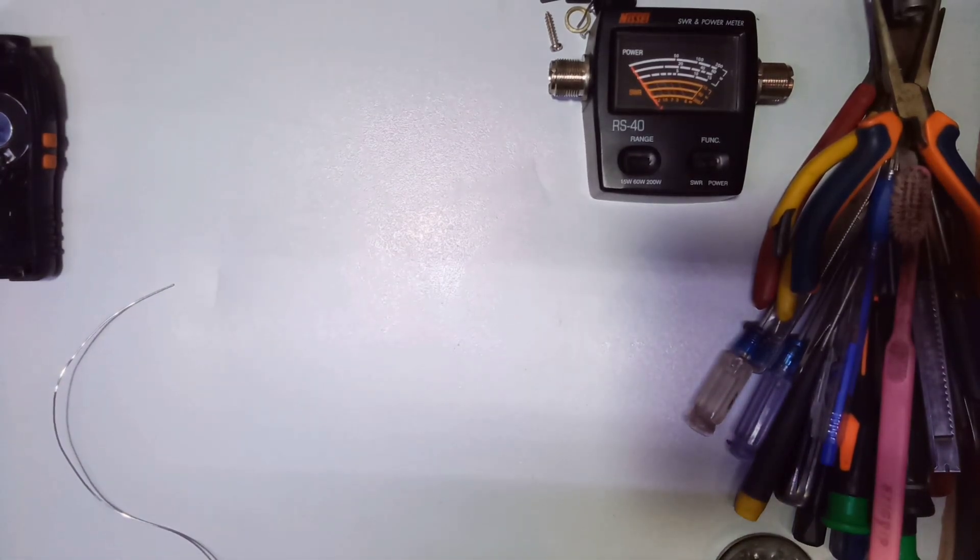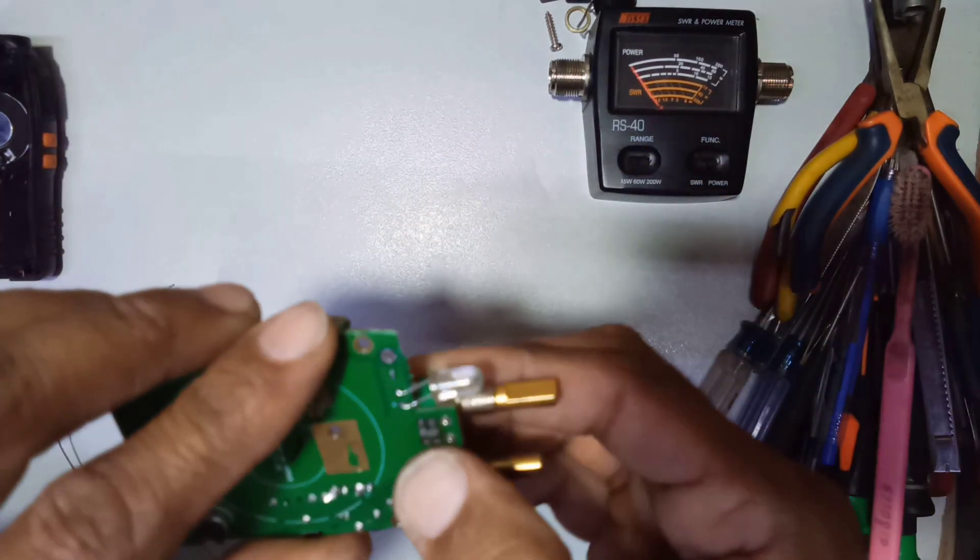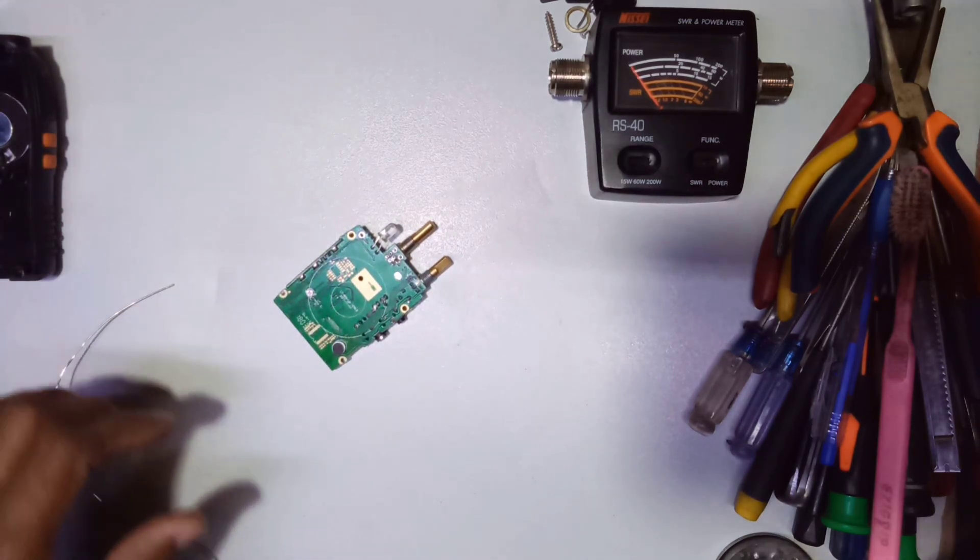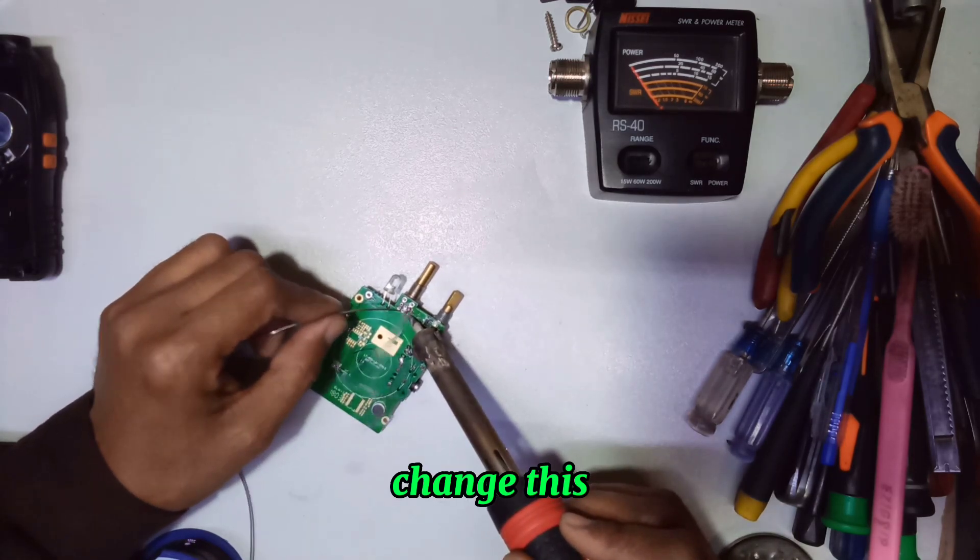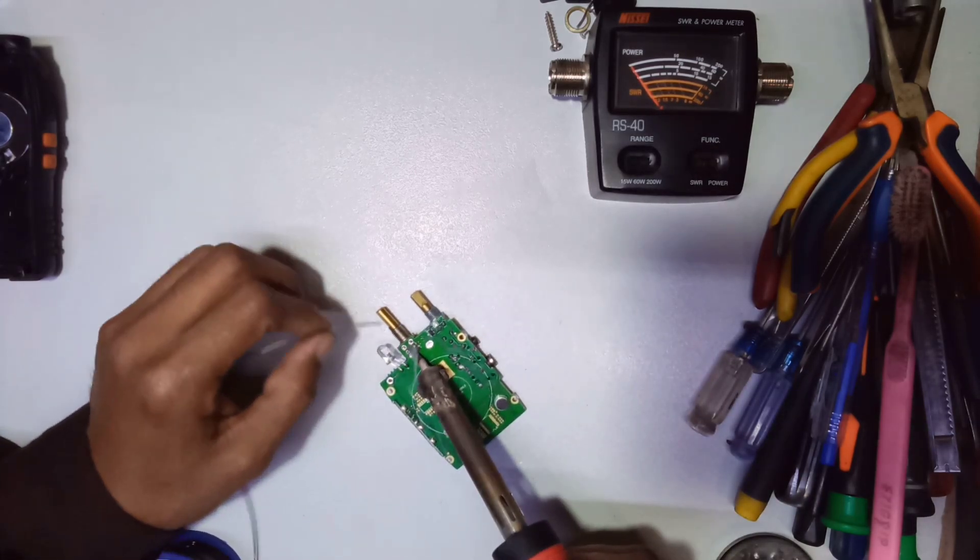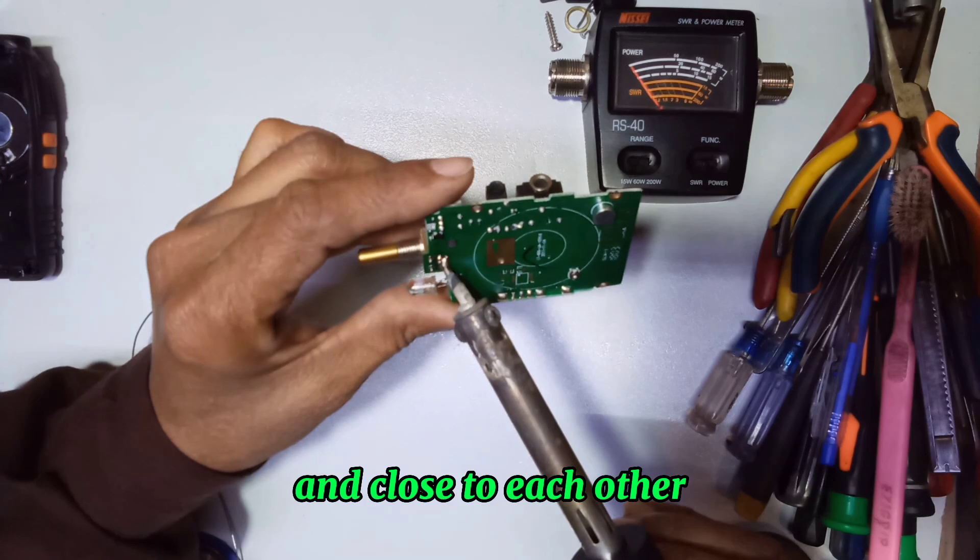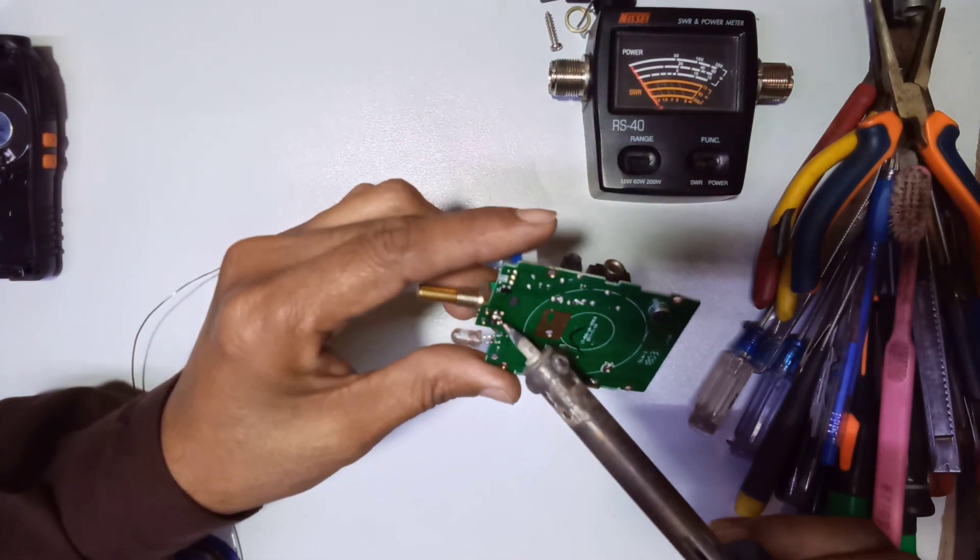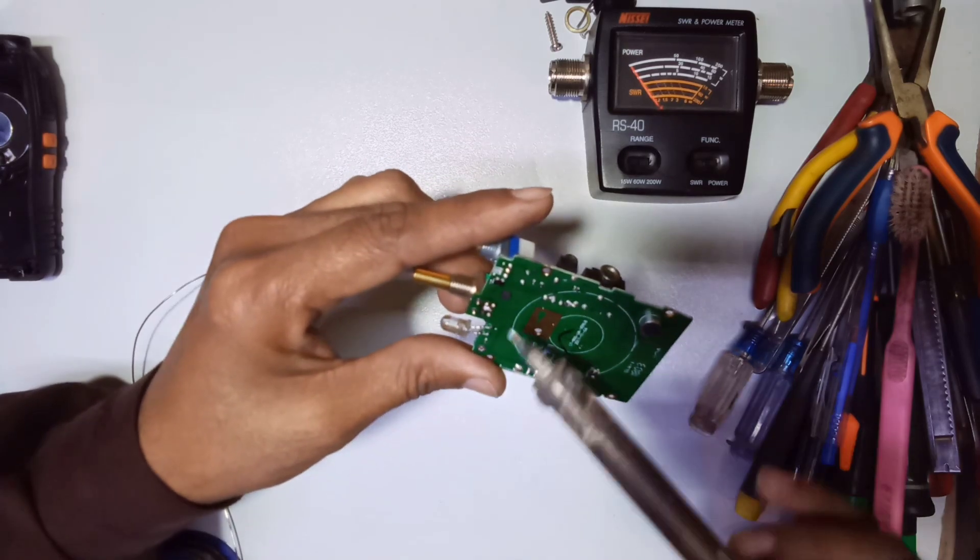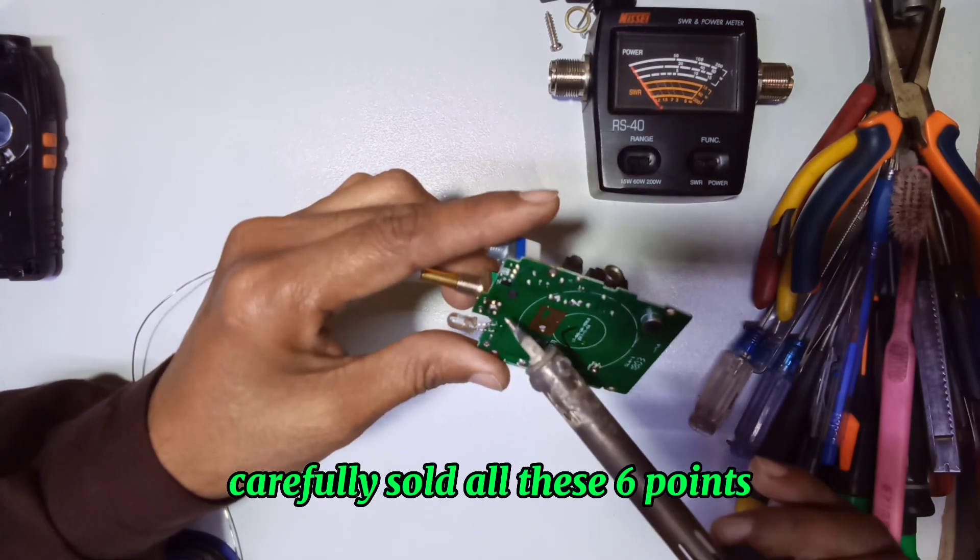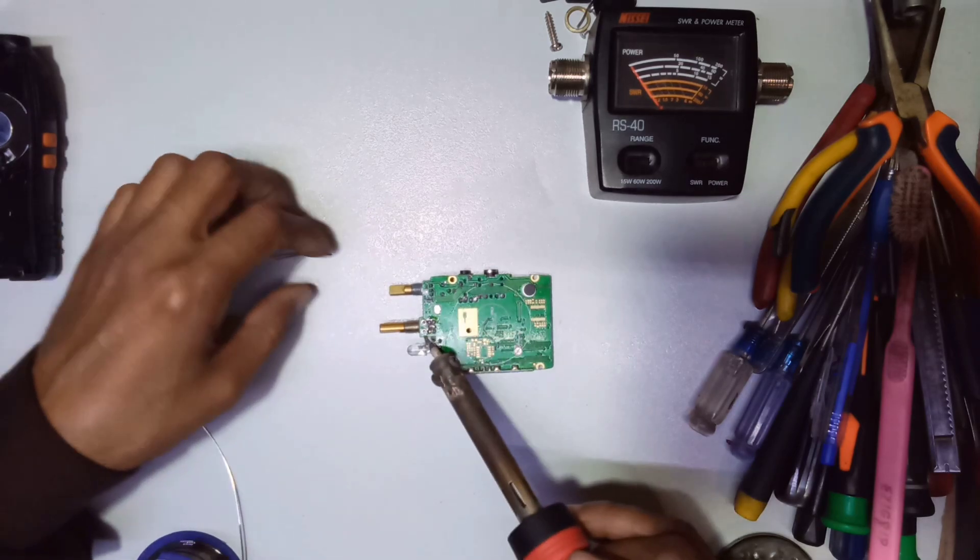Now I have changed this. Solder these points carefully because these are very small points and close to each other. So you must carefully solder all these six points. So we have been soldered these points now.